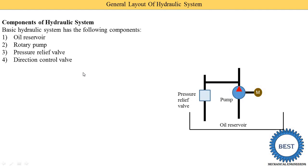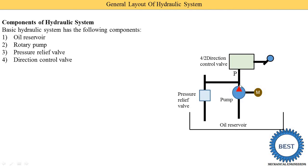The fourth component is the direction control valve. We will understand all these components in detail later. First, let's see what the various components are and make a list. Here you see it is a 4 by 2 direction control valve, meaning there are 2 inlets and 2 outlets — 4 ports total. One inlet comes from the pump (labeled P), and there are 2 outlets: the oil is either supplied to pipe A or pipe B. That's why its name is the 4 by 2 direction control valve.